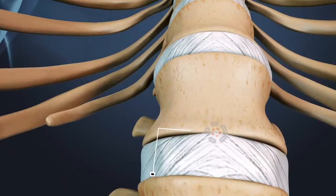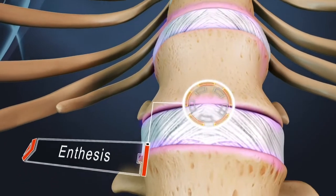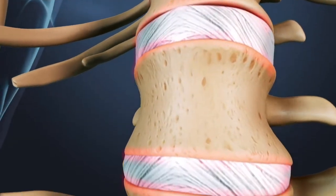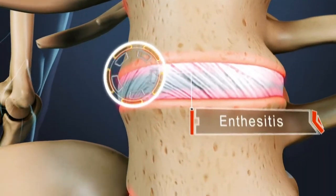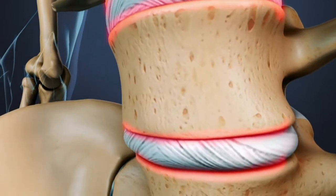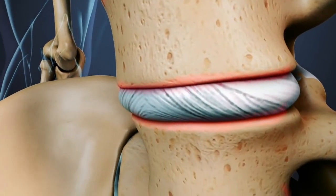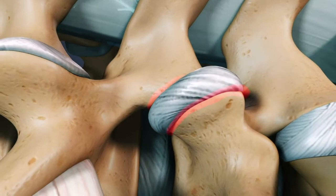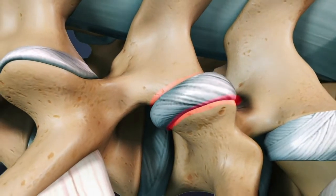The points at which the ligaments or tendons attach to the bone is called the enthesis. Inflammation of the enthesis, known as enthesitis, is the foundation of the disease process of ankylosing spondylitis. This inflammation causes bone to erode at connection points with ligaments or tendons.